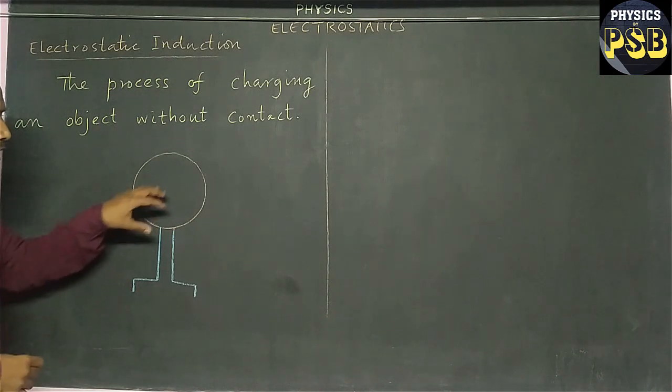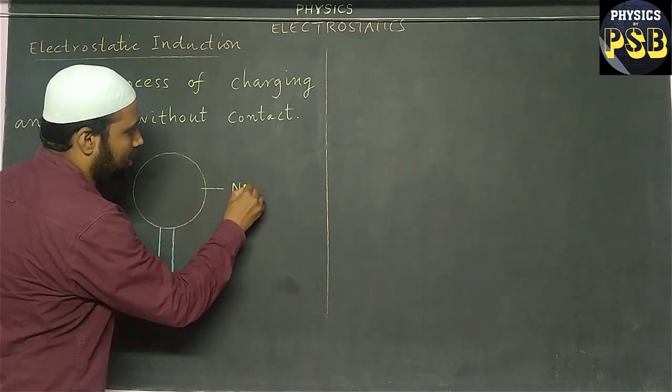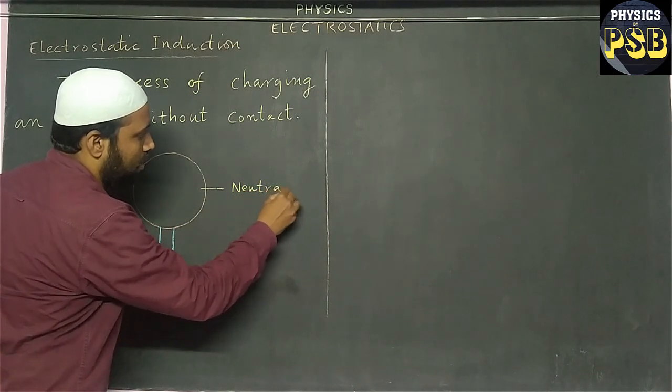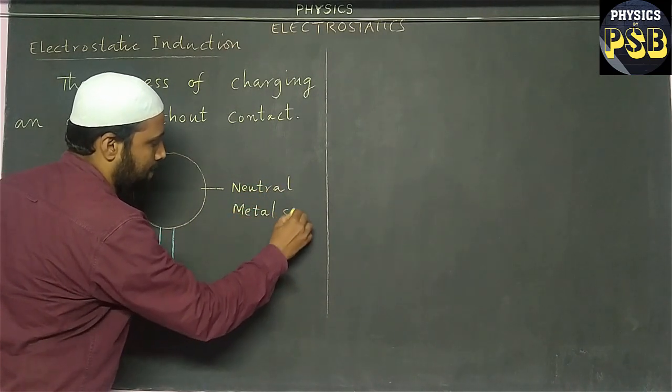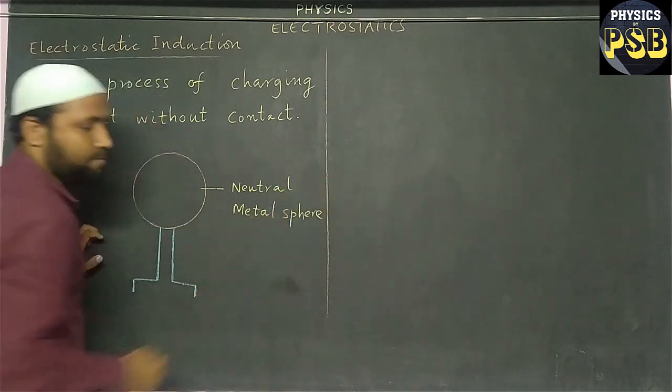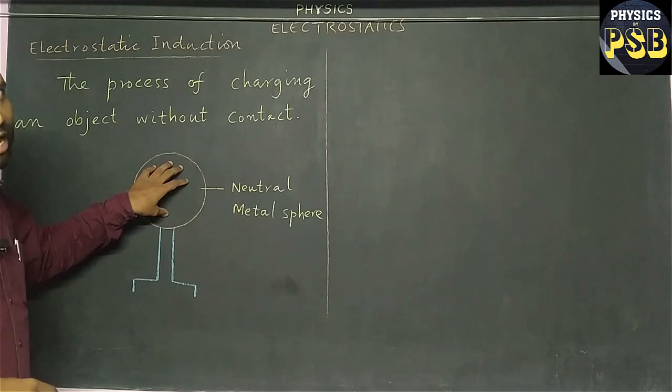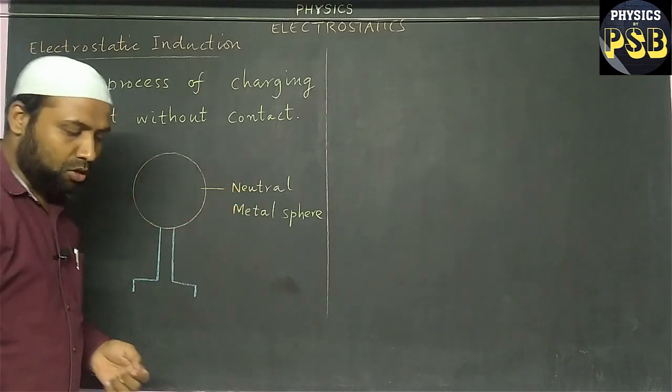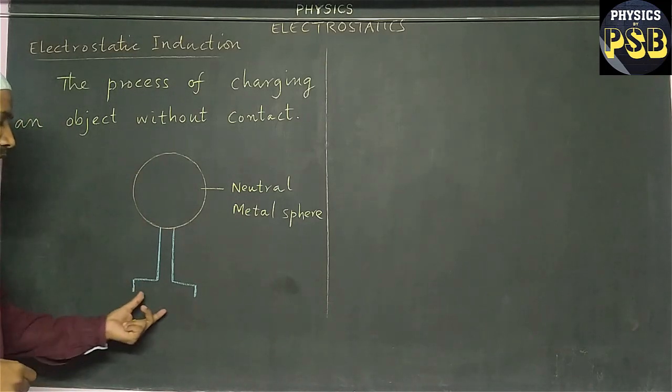I consider one neutral metal sphere. A neutral metal sphere, a sphere which does not have any charge on it, is referred as neutral metal sphere. I am going to charge this neutral metal sphere which is placed on an insulating stand.